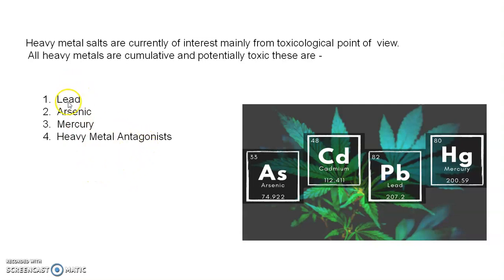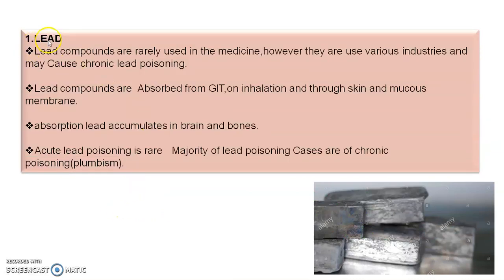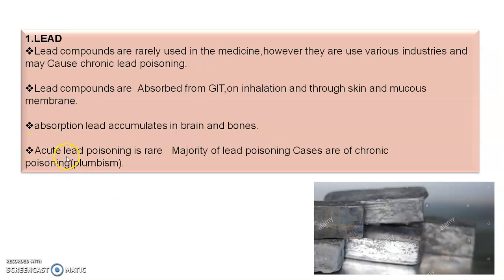First of all, we see lead poisoning. Lead compounds are rarely used in medicine; however, they are used in various industries and may cause chronic lead poisoning. Lead compounds are absorbed from the gastrointestinal tract (GIT), on inhalation, or through the skin and mucous membranes. Absorption of lead accumulates in the brain and bones. Acute lead poisoning is rare; the majority of cases are of chronic poisoning.